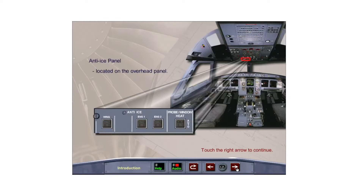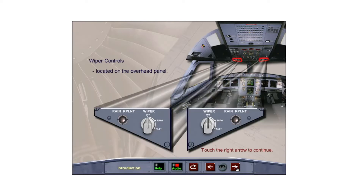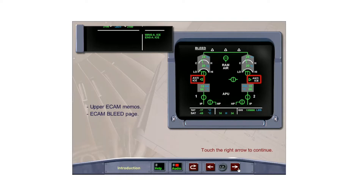The anti-ice controls are located on the overhead anti-ice panel. Wiper controls are also located on the overhead panel. Anti-icing information is displayed on the upper ECAM memo section and on the ECAM bleed page.